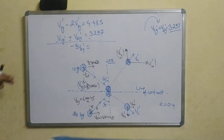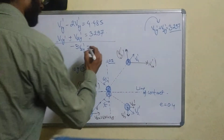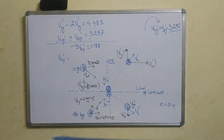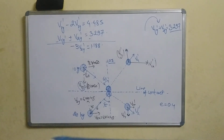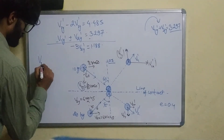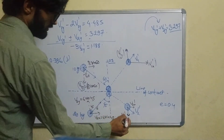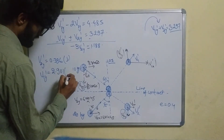Solving: −3·v2y' = 4.485 − 3.297, giving 1.188. So v2y' = 0.396 m/s, and v1y' = 0.996 m/s.